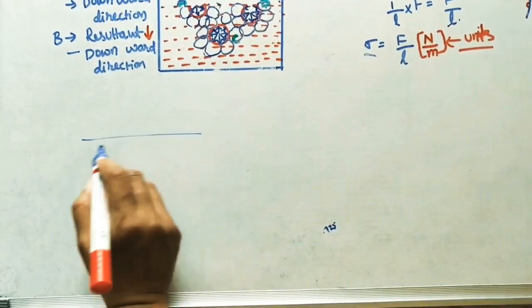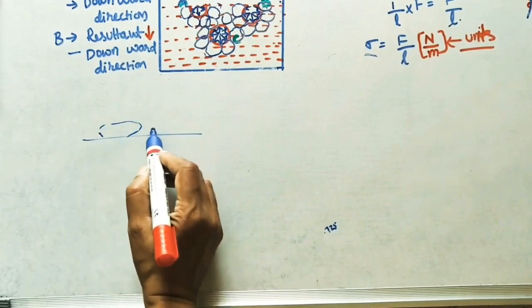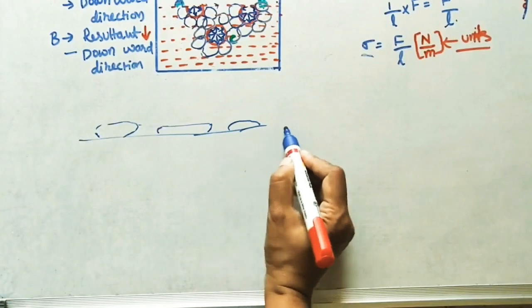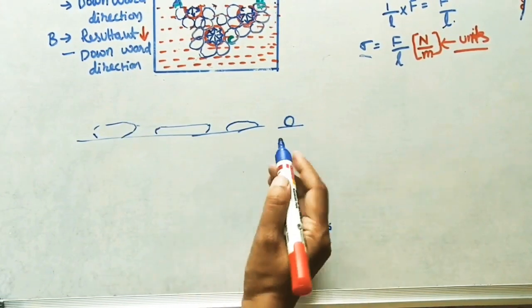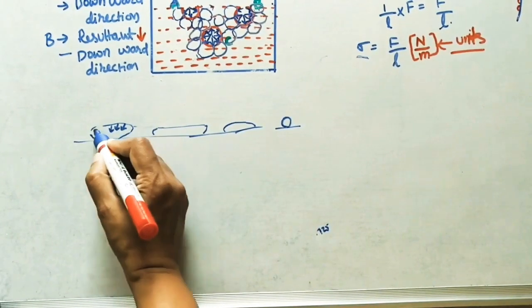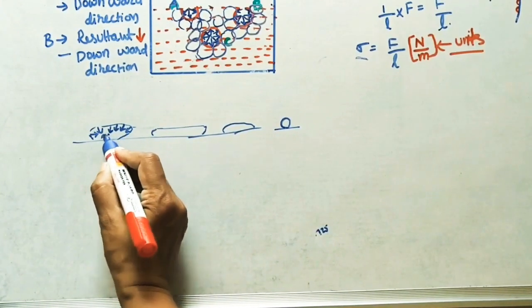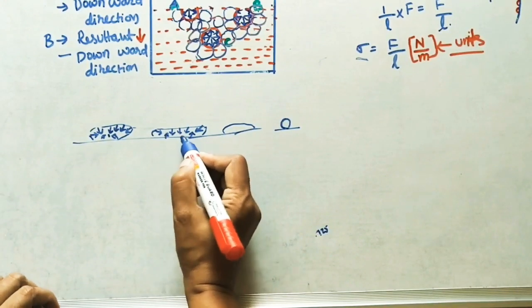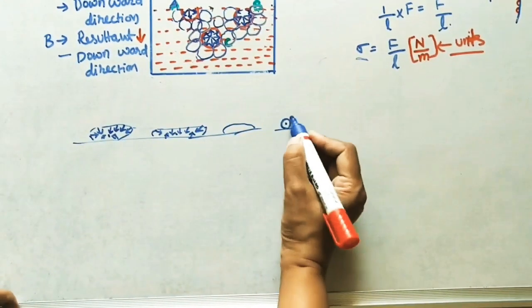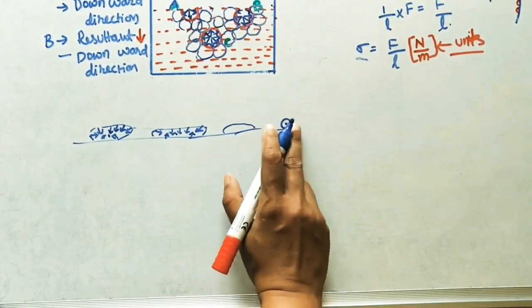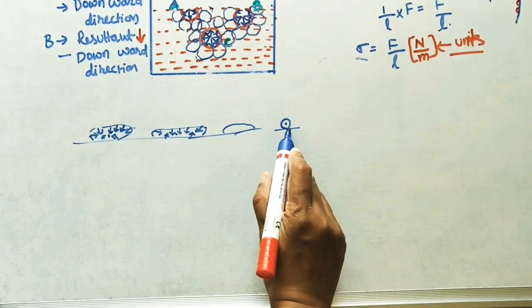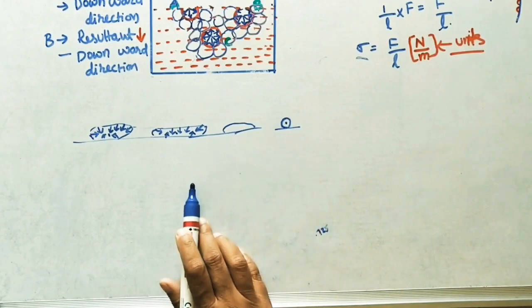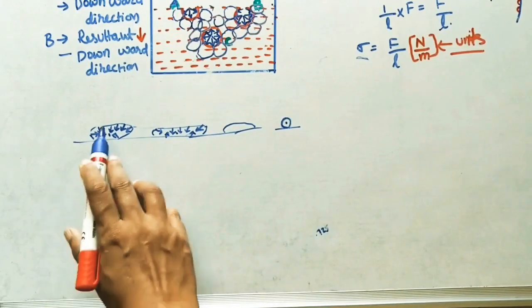As an example of surface tension: if I pour water on a surface, instead of flowing it will try to sink and form droplets or a spherical shape. Why? Whatever boundary molecules are there, because of cohesive forces or surface tension, all will try to come at the center of the liquid. That is why it gets a spherical shape. Why is a liquid droplet in the form of a sphere? Because of surface tension it tries to get the minimum surface area, and a sphere has the minimum area.